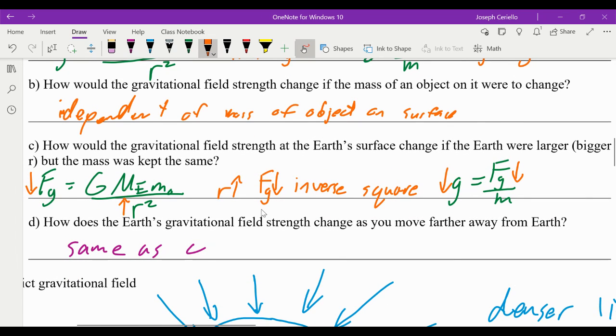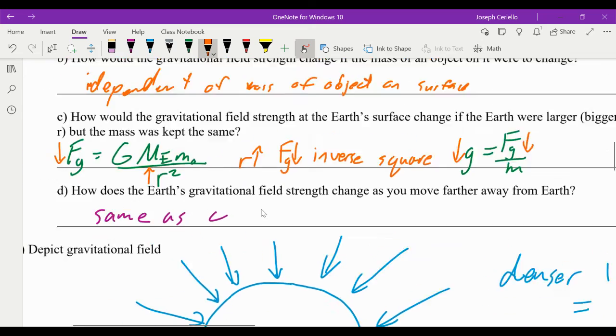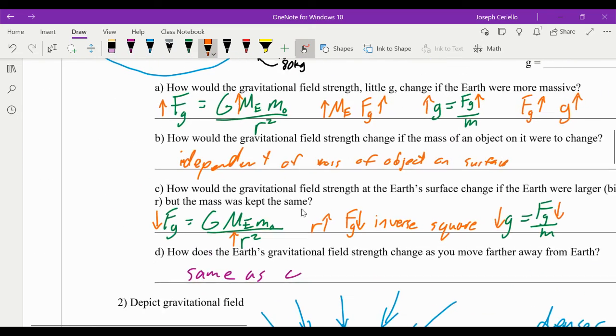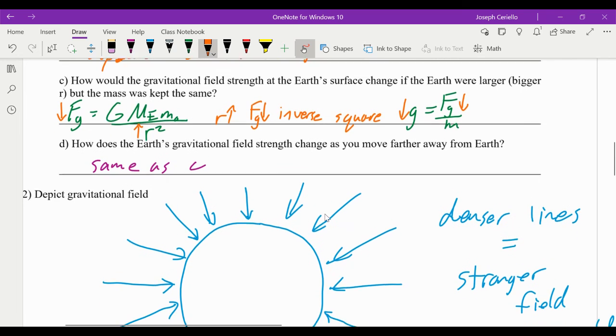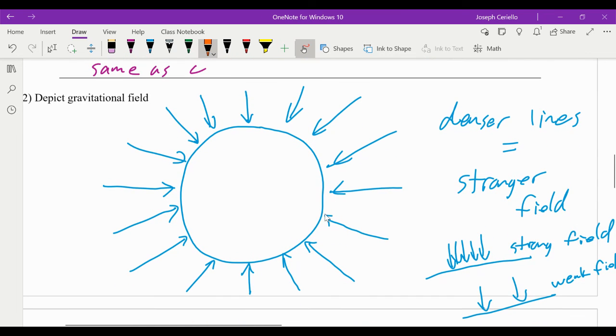And question D, if you were farther away, it would be the same deal. If you were farther away, your R increases. Fg goes down. Therefore, little g goes down, gravitational field strength.